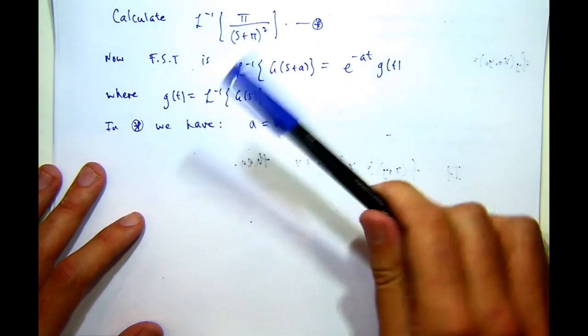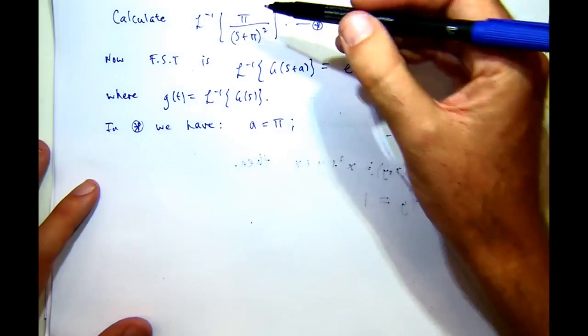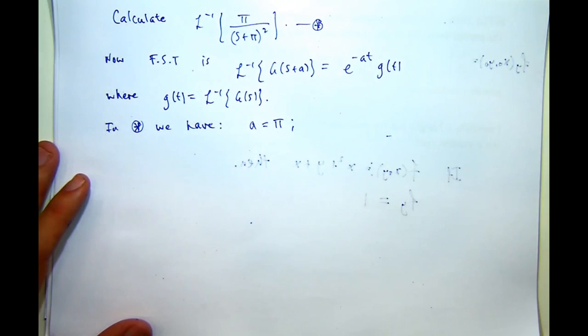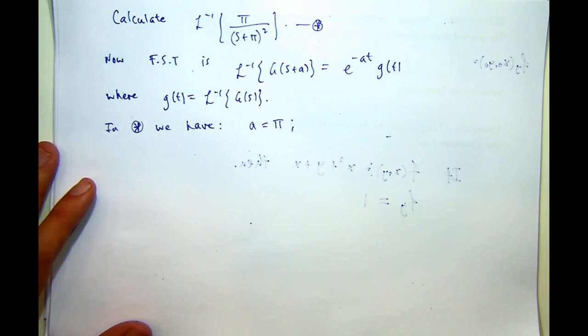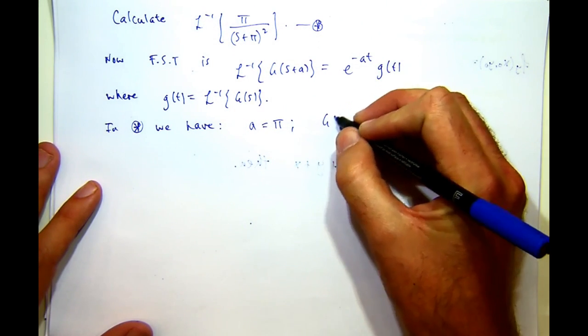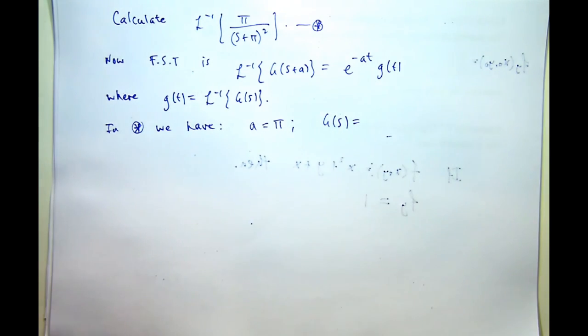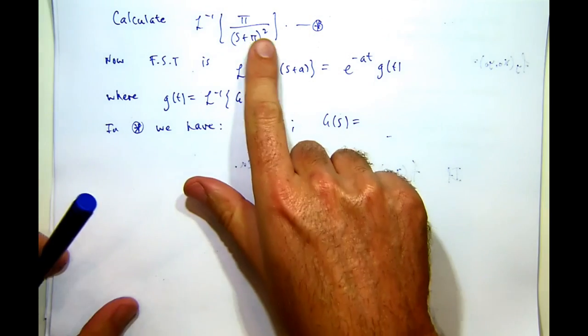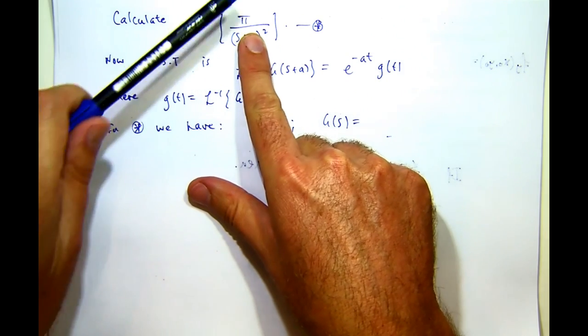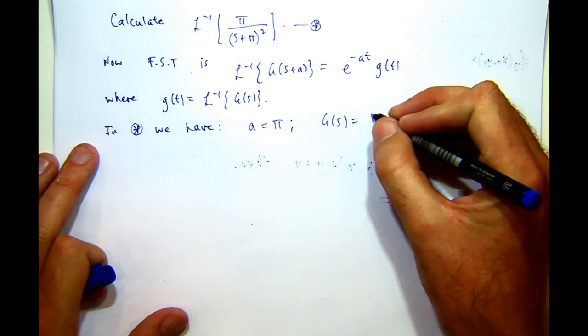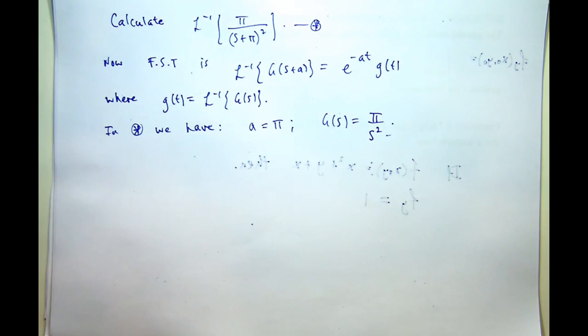And if G of (s+π) is this, what's big G of s? Well, essentially, it's pretty easy in this one. And all I have to do is cover up that bit. It's going to be π on s².